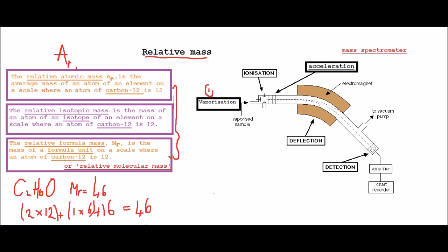This is stage 1 and it's called vaporization. Basically, a sample is put into the machine and it is turned into a gas, or we could say it has been vaporized using an electrical heater. So this is this stage here.